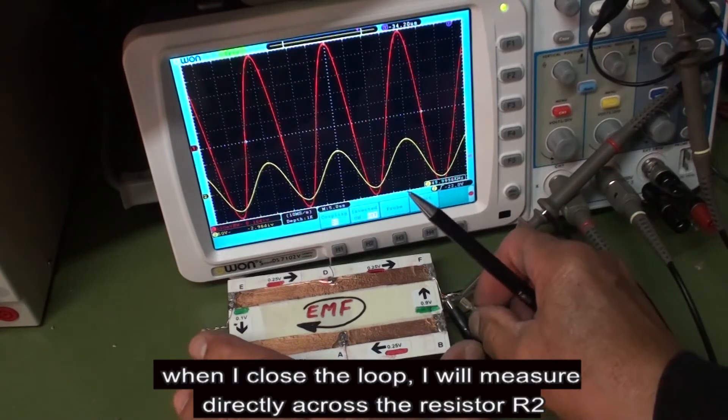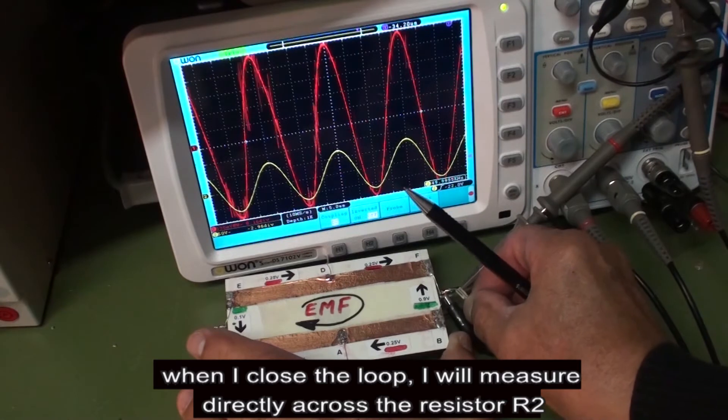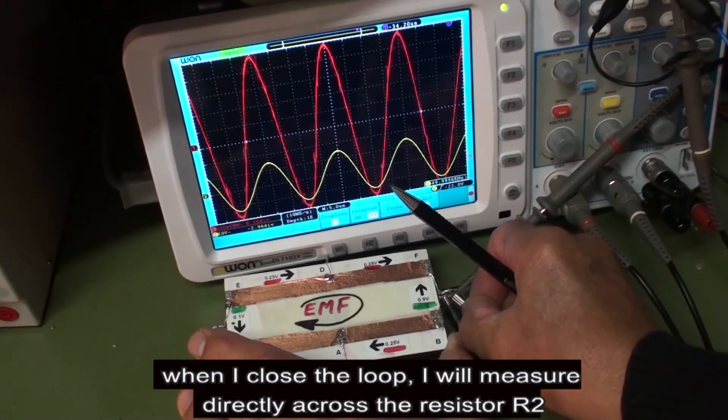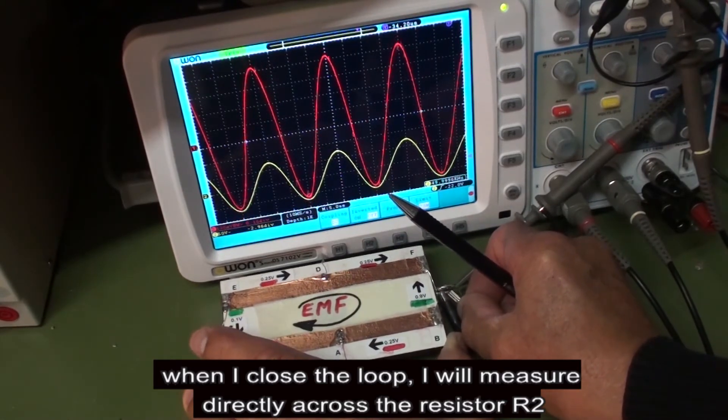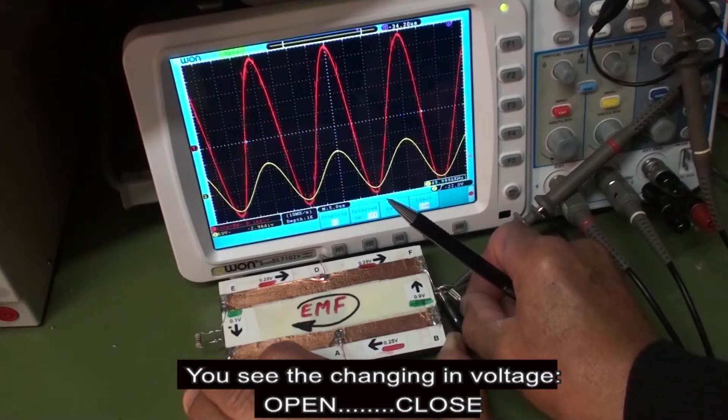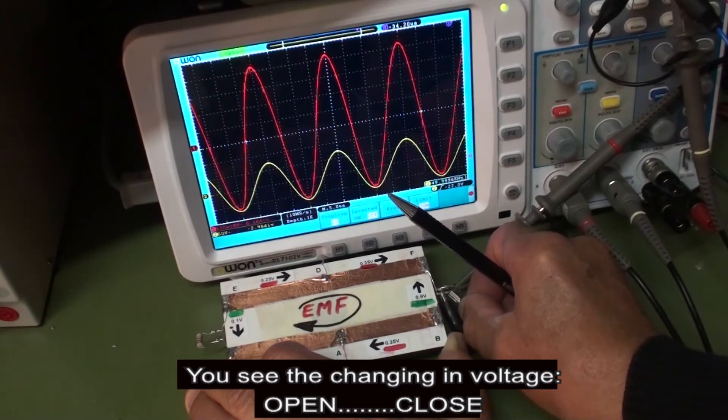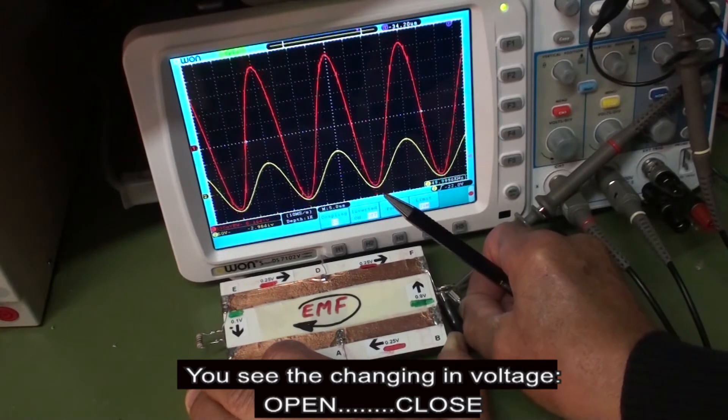When I close the loop, I will measure directly across the resistor R2. You see the changing in voltage: open, close, open, close.